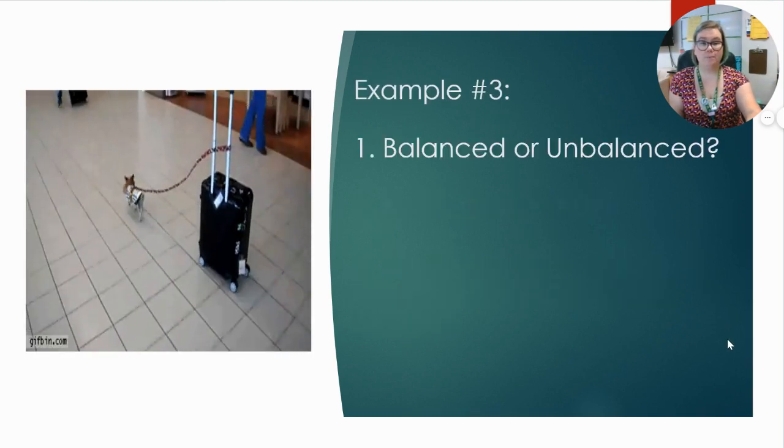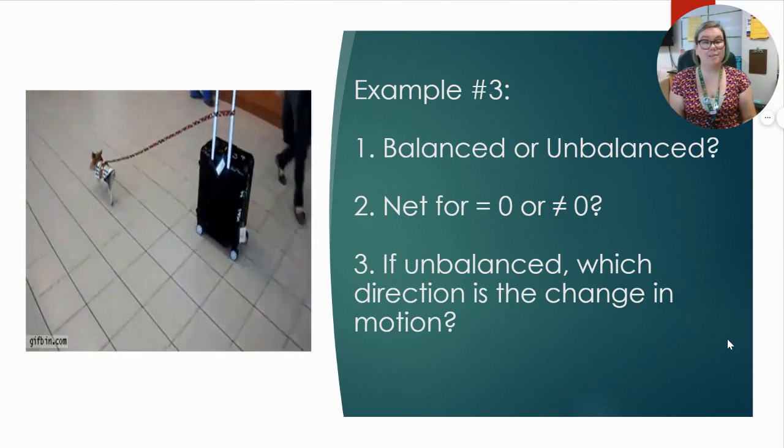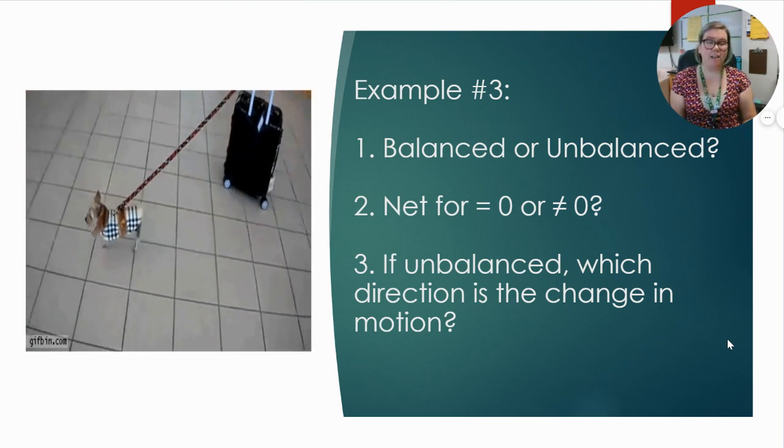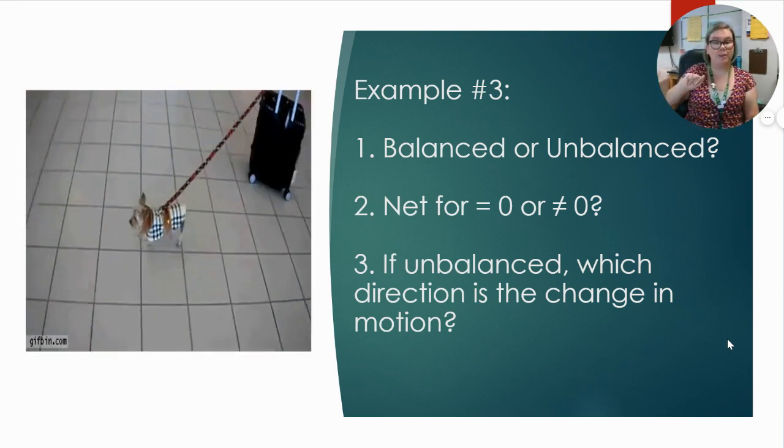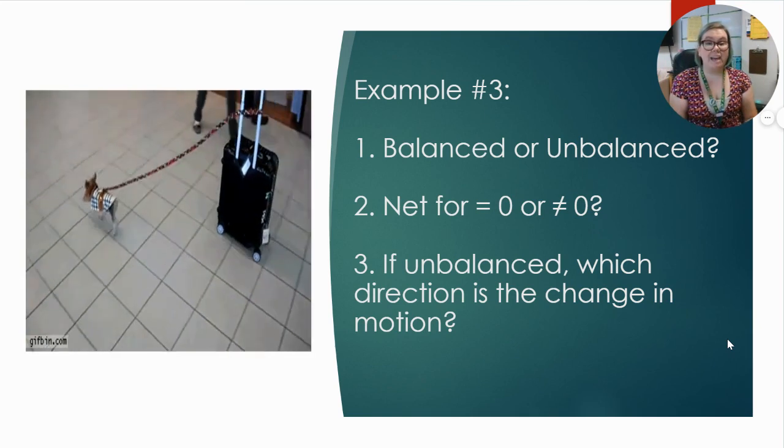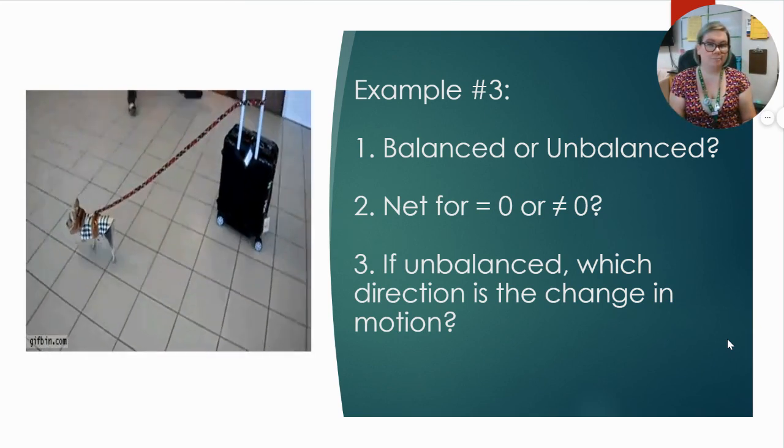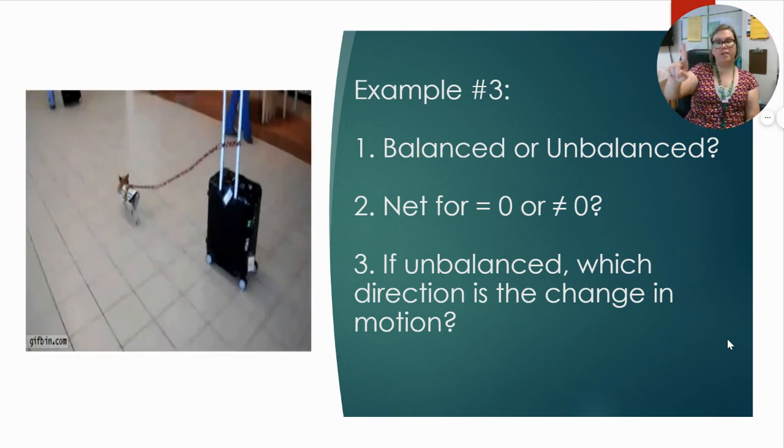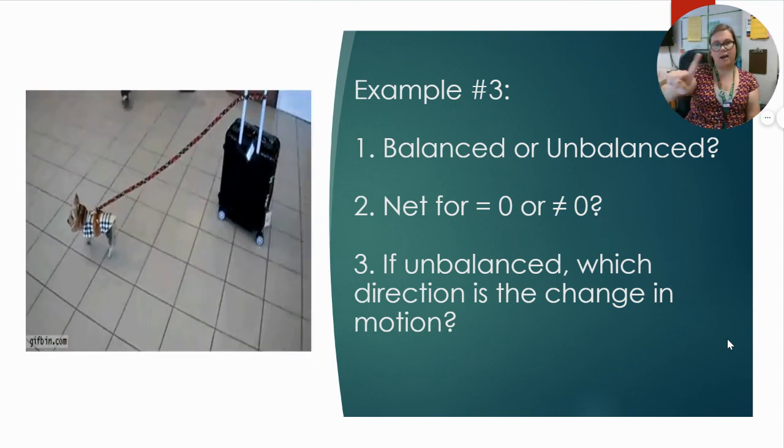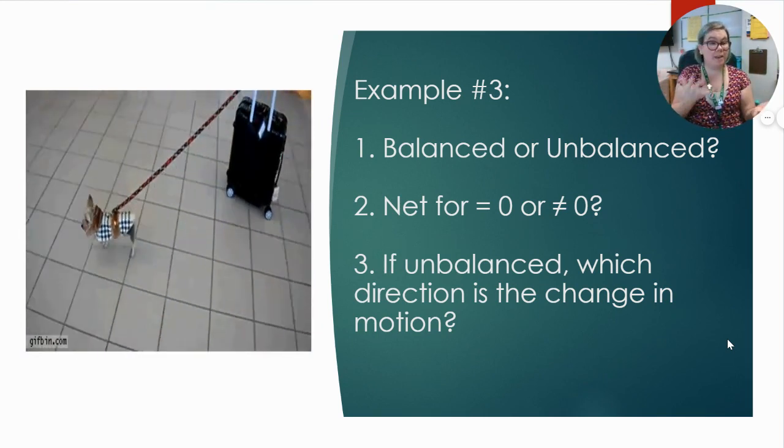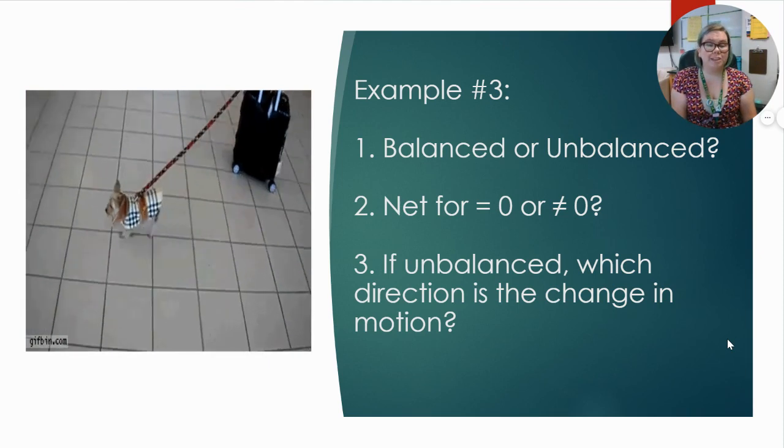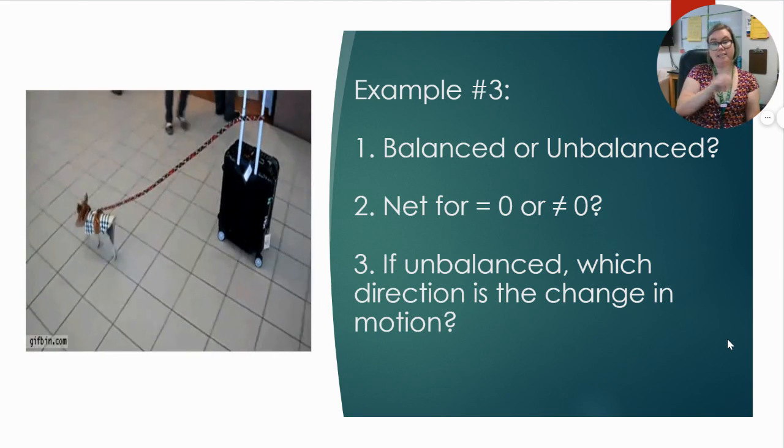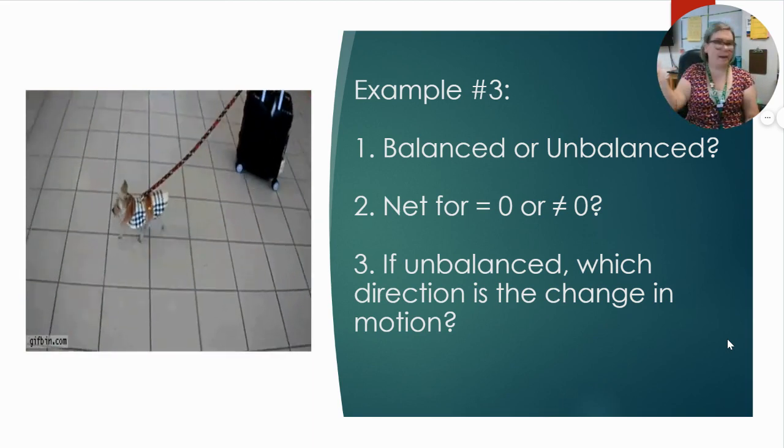Last example, our dog pulling a suitcase, is this balanced or unbalanced? So this is an unbalanced force since the dog is moving and it's moving that suitcase. So now is our net force zero or not zero? Our net force is not zero, right? Because our dog is moving that suitcase, so we've got a net force kind of going with that. And then three, since this is unbalanced, which direction is the change in motion? You can either say to the left or the direction the dog's moving.